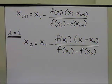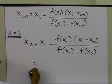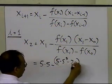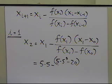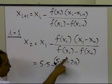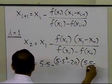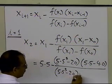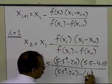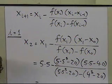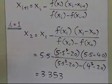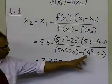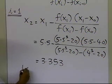x1 is 5.5, so f(x1) is 5.5 cubed minus 20. Plugging in the values: x2 = 5.5 minus [(5.5 cubed minus 20) times (5.5 minus 4.0)] divided by [(5.5 cubed minus 20) minus (4 cubed minus 20)]. This value turns out to be 3.353. So that's the estimate of the root of x cubed minus 20 equals 0 after the first iteration, based on initial estimates of 4 and 5.5.